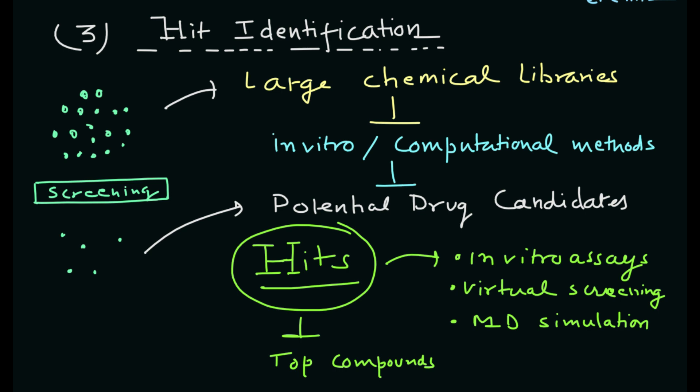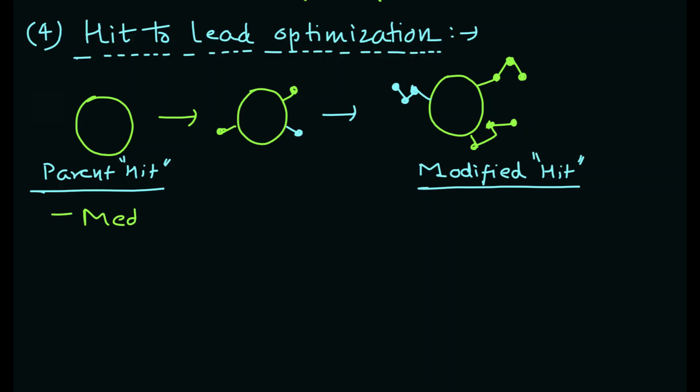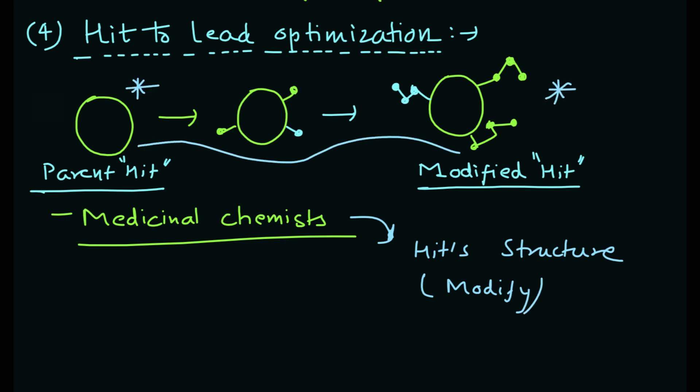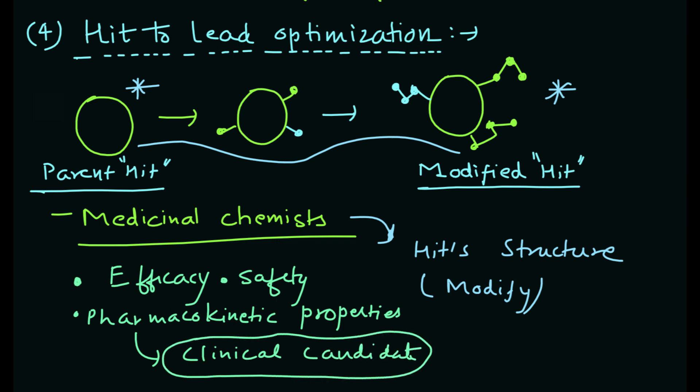The next step is lead optimization. The lead compound from the hit molecules is further optimized to improve its efficacy, safety, and pharmacokinetic properties with the goal of identifying the clinical candidate. The clinical candidate is a compound that has demonstrated efficacy and safety in preclinical studies and is suitable for testing in humans.